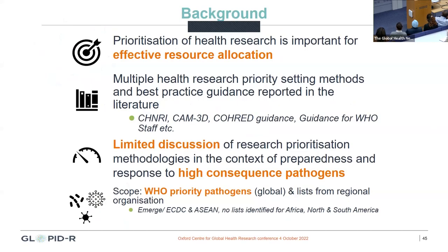Prioritization for health research is important for effective resource allocation. From the literature, we see multiple approaches that have been reported — examples include the green count model. However, there is limited discussion on prioritization methodologies in the context of preparedness and response for high-consequence pathogens.